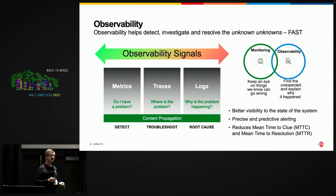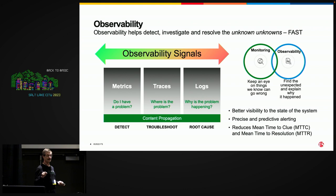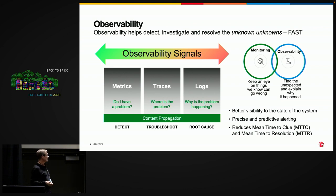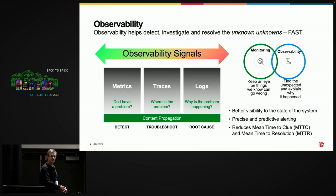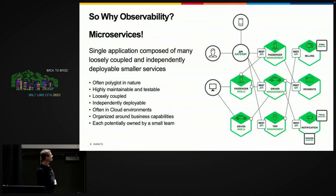This is basically designed to help reduce what's known as mean time to clue — in other words, what went wrong — and in turn, reducing mean time to resolution. When we have monoliths, nobody cares, because our pathways are fixed, they're always set.